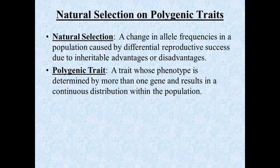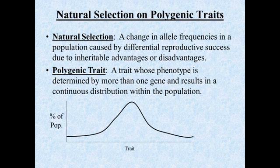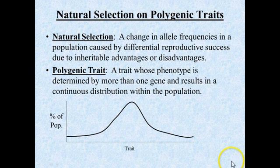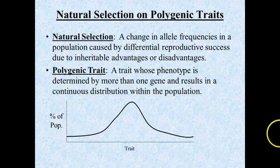Another thing we want to understand is what is a polygenic trait. That's simply a trait with a phenotype determined by more than one gene. What that usually does is result in what we call a continuous distribution within the population, shown as a normal curve or bell-shaped curve. If we chart percentage of population on one axis and the degree of that trait on the other — for example, height in humans.